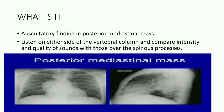So what is the D-spine sign? It is an auscultatory finding in posterior mediastinal mass. To elicit this sign, one must listen on either side of the vertebral column and compare the intensity and quality of sounds with those over the spinous processes of the thoracic vertebrae.